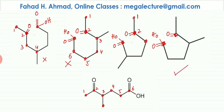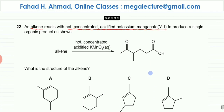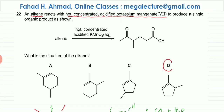The only remaining option is D, which is the correct answer. In option D: C1 is present, C2 has a ketone (double bond O), C3 has a one-carbon branch, then C4 and C5, and C6 has a carboxylic acid group — exactly matching the target structure. The structures are just drawn differently; they are the same molecule. Option D is correct.